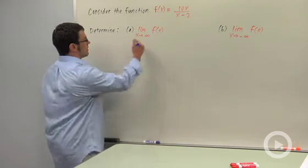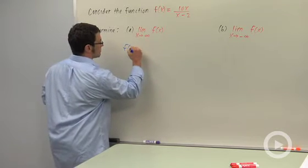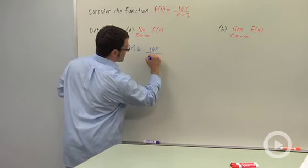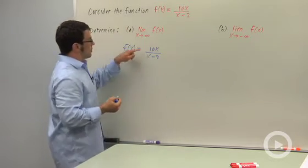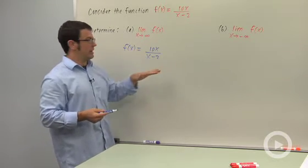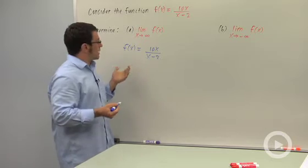Let's take a look at the function itself, f of x. 10x over x minus 2, you can see that both the numerator and denominator are going to get very big as x moves towards infinity. So it's not clear exactly what's happening.